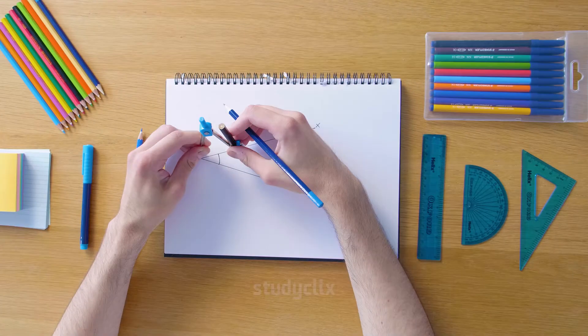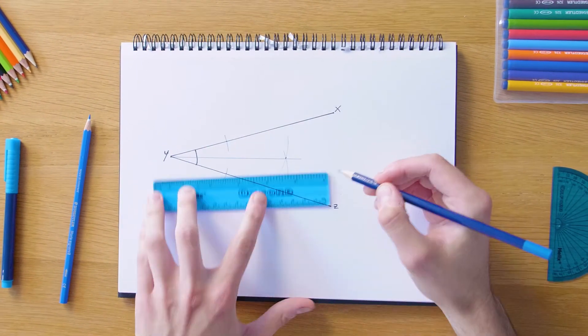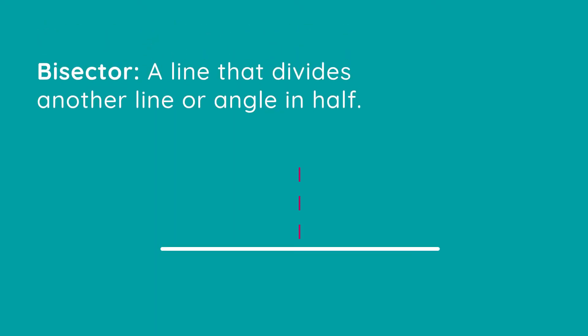So this is what our final product is gonna look like once our angle is nicely bisected. And just in case you're wondering what a bisector actually is, a bisector is just a line which divides another line or an angle in half. So now that we've defined that key term we're just gonna start the construction.